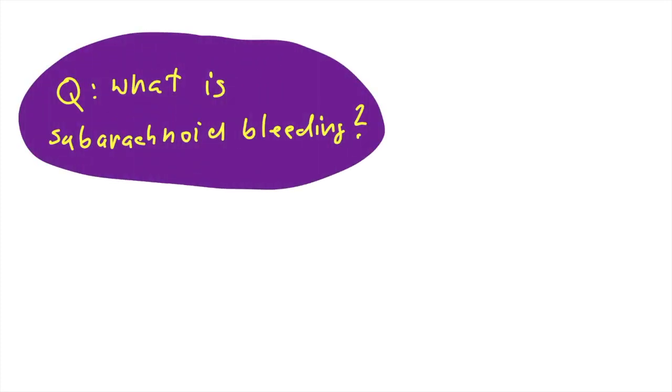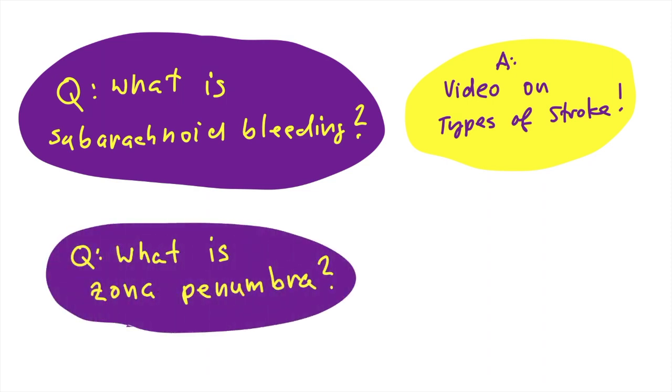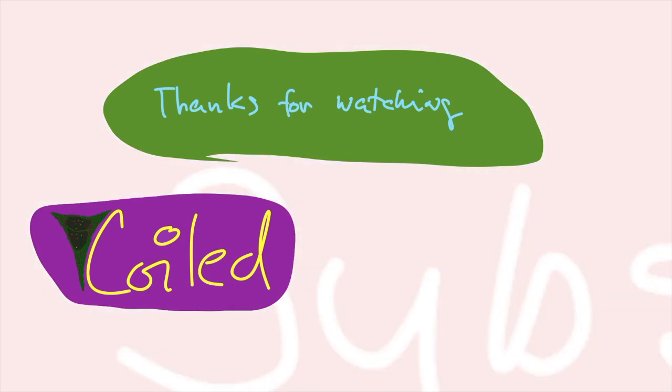So that's all about transitory ischemic attack. And if you are interested in what is subarachnoid bleeding, just check the lecture on types of stroke. And if you wonder what is zona penumbra, just check the video on zona penumbra. So thanks for watching and don't forget to subscribe.